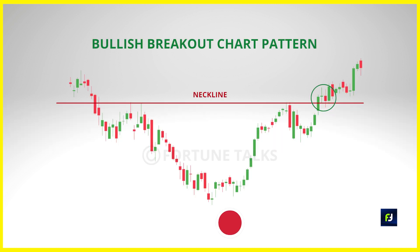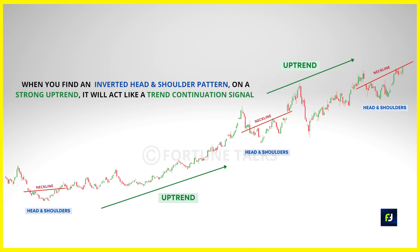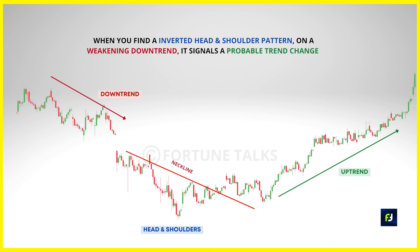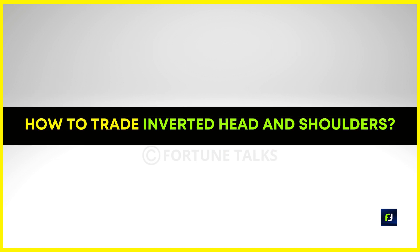When trading the inverse head and shoulders pattern, it makes sense to trade it when the market is in an uptrend — this increases your odds of winning because you are trading with the trend. Another opportunity is when you spot this pattern at the end of a downtrend, where it acts as confirmation that the existing downtrend is weakening and the market might reverse higher. But make sure you don't trade this pattern in a very strong downtrend because the possibility of trend change is very low in such instances.